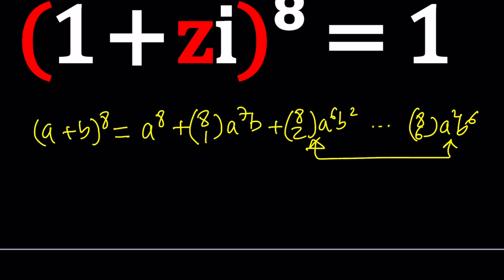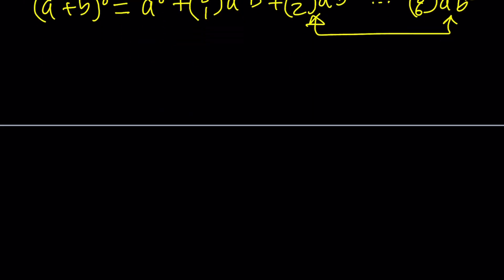The easy approach is: eighth roots of unity. Let's go ahead and do this. Complexify the one on the right-hand side. Because one in the real world is just one, but in the complex world it can be written in infinitely many ways — and that's what makes complex numbers amazing.